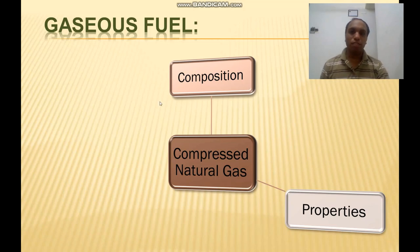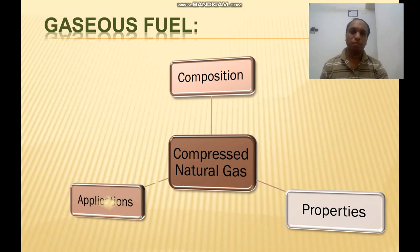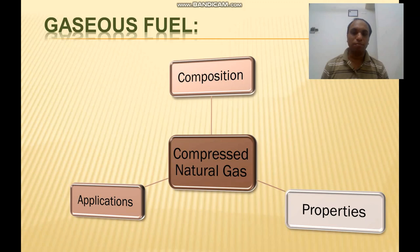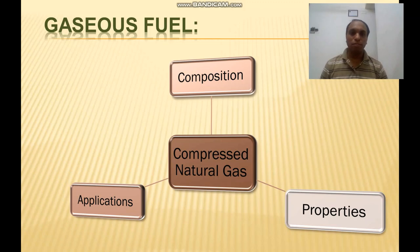The applications of CNG: it is used as a fuel for vehicles and automobiles due to lower maintenance cost and eco-friendliness. It is used for domestic purposes, and it can also be used in place of piped natural gas. It can also produce LNG. This covers CNG. Now let us discuss hydrogen gas.